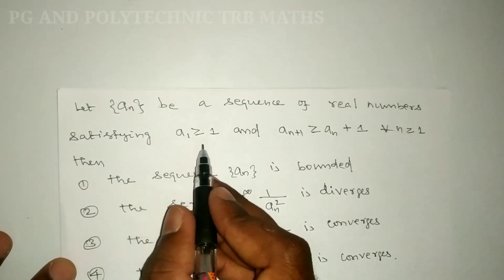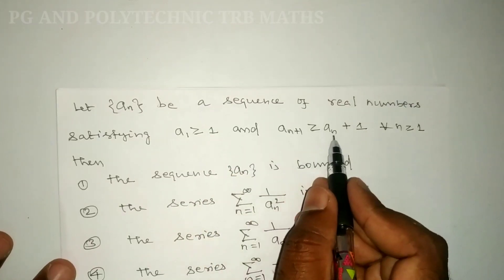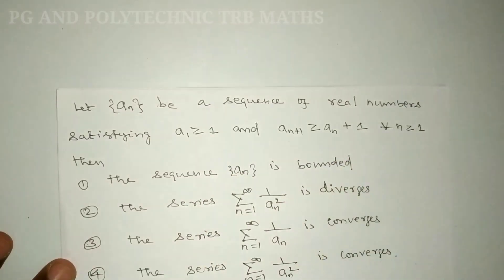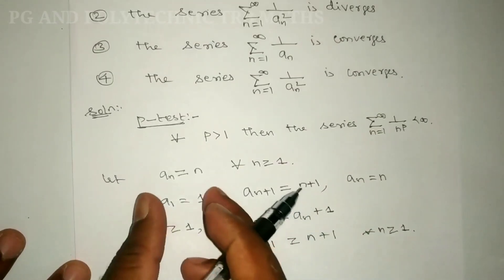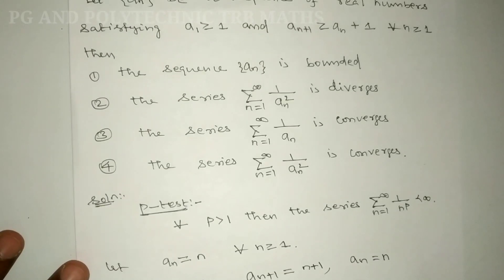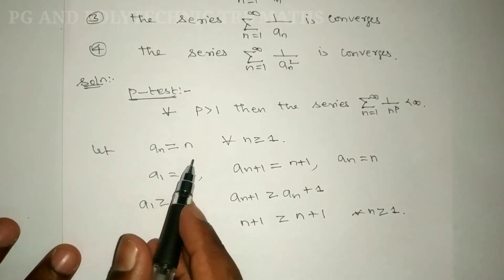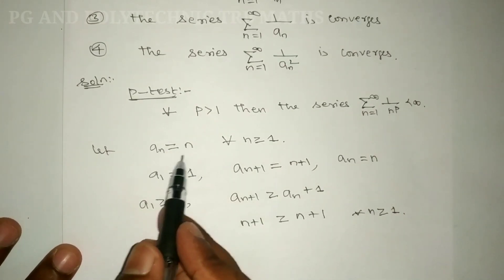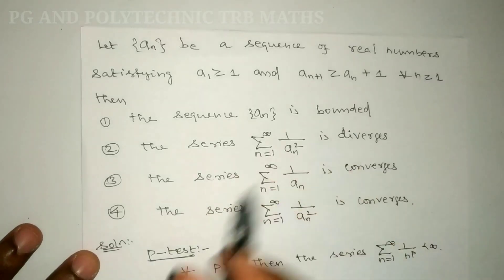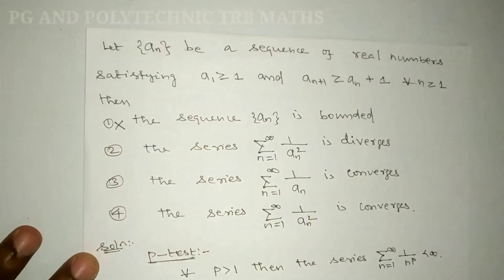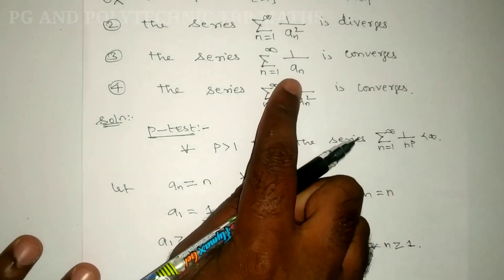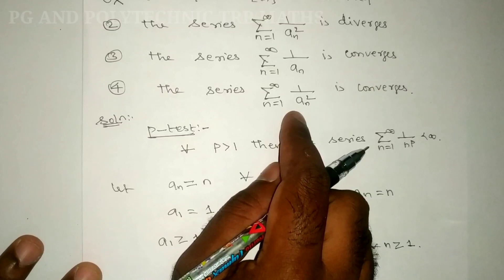With both conditions satisfied by a_n = n, we can see that the sequence {a_n} is not bounded — it grows without bound. So Option A, which claims the sequence is bounded, is false.